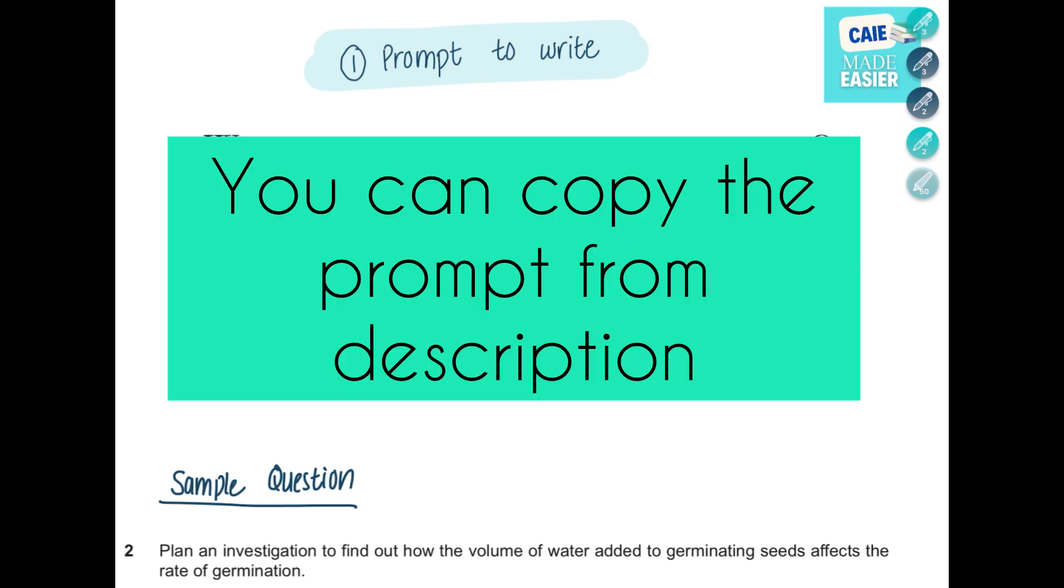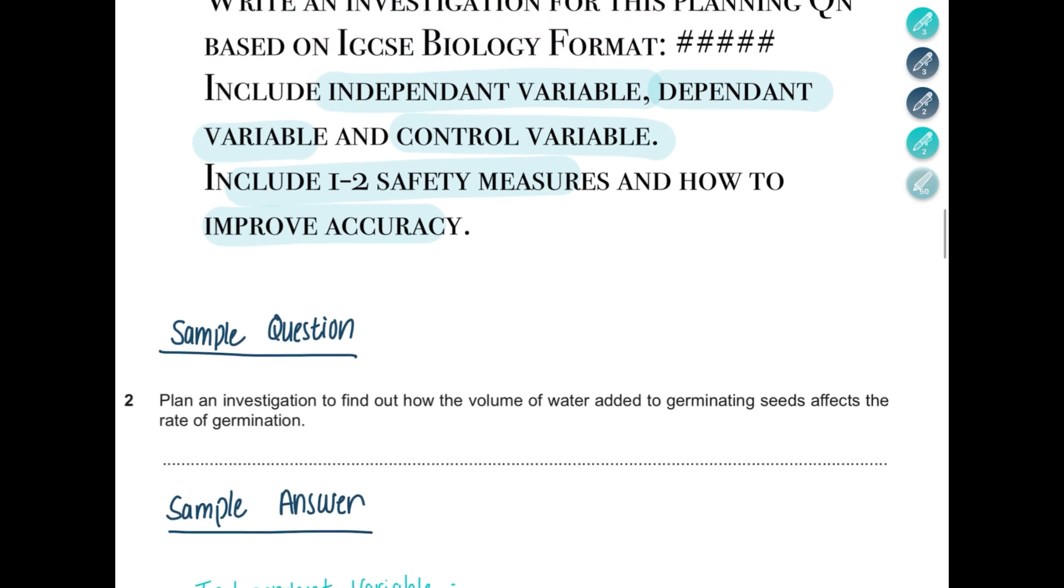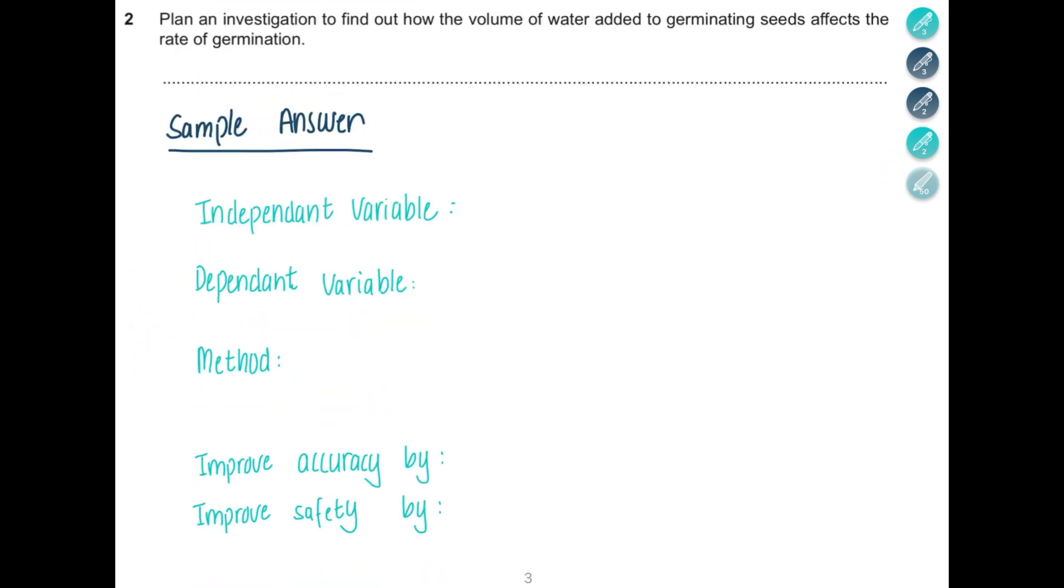I used this sample question and I pasted it on ChatGPT. Remember, when you are writing down your answer, write it like this: write your independent variable, write your dependent variable, then write your method, and then one step to improve accuracy, one step to improve safety.